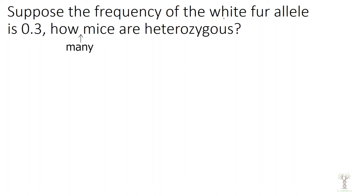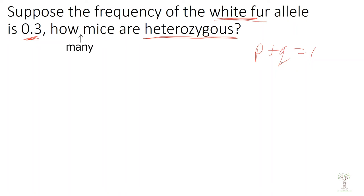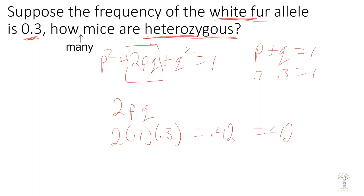Let's do another example. Suppose the white fur allele frequency is 0.3. How many mice are heterozygous? Using P + Q = 1, I have been given Q = 0.3, so P must be 0.7. To find heterozygous mice we use the second equation: 2PQ = 2 × 0.7 × 0.3 = 0.42, which equals 42%.